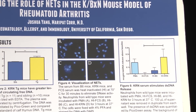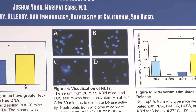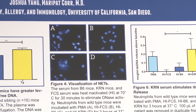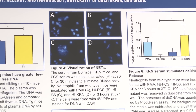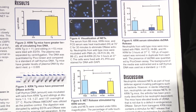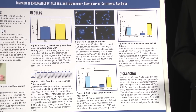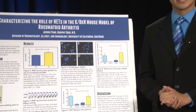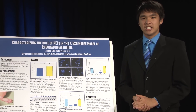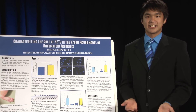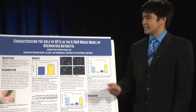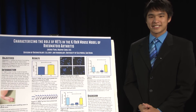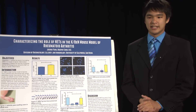Knowing that KBXN mice have higher neutrophil activity, we wanted to determine whether KBXN mice had higher levels of circulating free DNA. To do this, we did a pico-green assay, which detects levels of DNA in a sample by fluorescence. We tested the plasma of KBXN mice and wild-type sibling mice. What we found was that KBXN mice have increased levels of circulating free DNA over their wild-type sibling mice to a statistically significant amount.